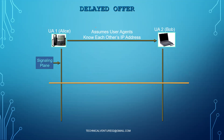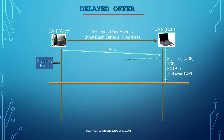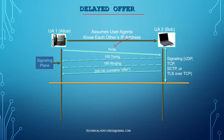In a delayed offer, the initial INVITE does not send any codec capabilities — it is a normal INVITE without SDP. After 100 Trying and 180 Ringing, you get a 200 OK that contains the offer with SDP capabilities. After this 200 OK, the ACK from User Agent 1 to User Agent 2 contains the answer after negotiation. Then the RTP stream starts, followed by the BYE and 200 OK.